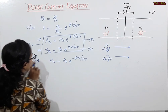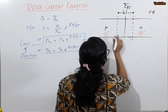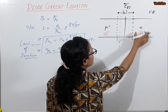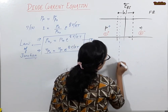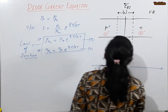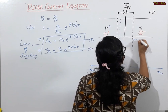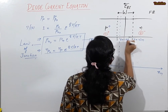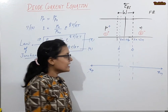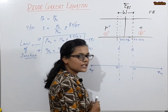Now we need to plot the minority carrier distribution. The diode is assumed to be heavily doped on one side and normally doped on the other, so the depletion layer is reduced. For the distribution plot, the x-axis goes from x = −WP on the P-side to x = WN on the N-side.